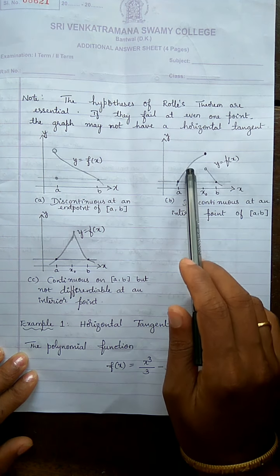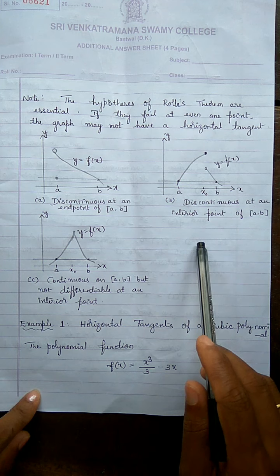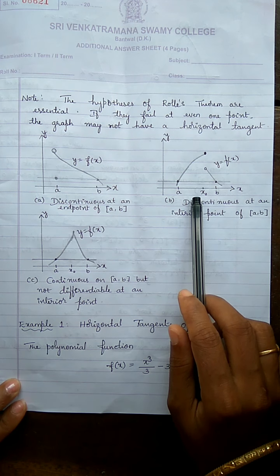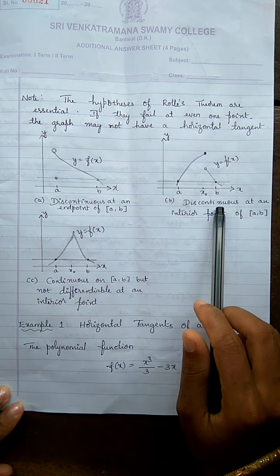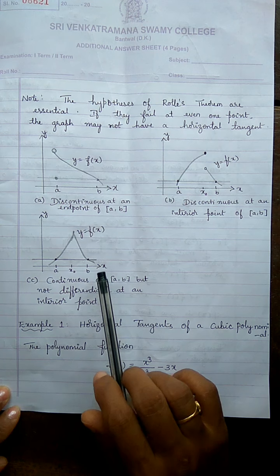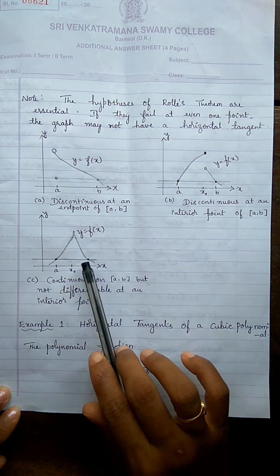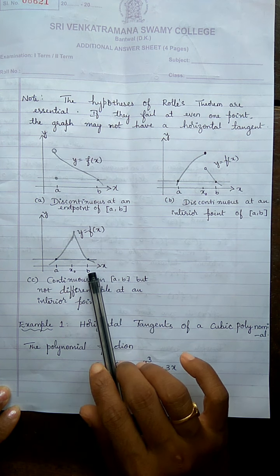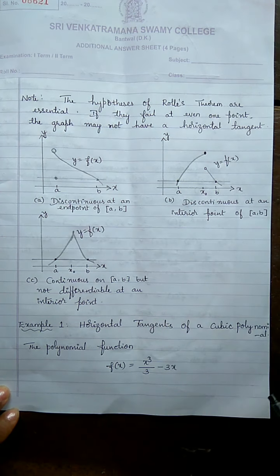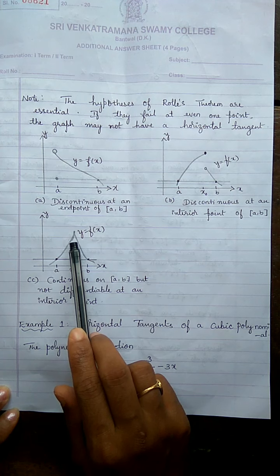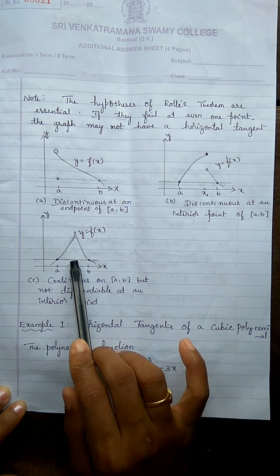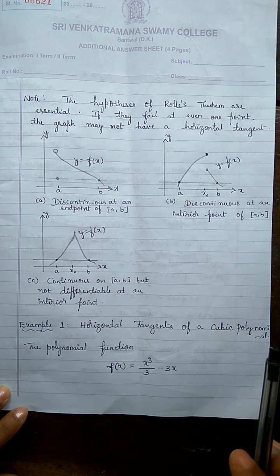Similarly, in this function at an interior point inside the closed interval [a, b], this function is not continuous. So therefore this graph also may not have a horizontal tangent. Now consider the next case: if y = f(x) is continuous on the closed interval [a, b] but non-differentiable at an interior point, then this graph also has no horizontal tangent. So these three cases give no horizontal tangent.